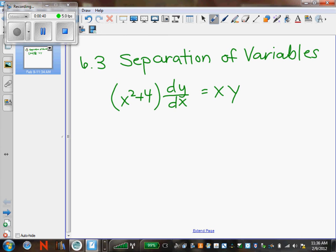Okay, so we're going to do the same thing. We want our y's on one side and our x's on the other. So this will be 1 over y dy equals x over x squared plus 4 dx. I want to integrate both sides.